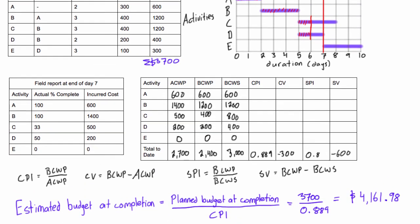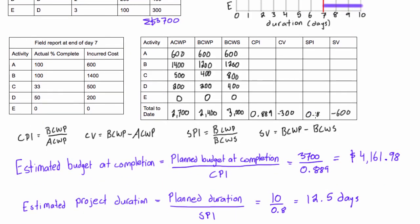And again this makes sense because from our earned value analysis we learned that our SPI was less than one, so that told us we are behind schedule. We were behind schedule at the end of the seventh day, so if we continued on that track, we would expect the entire project to be behind schedule. This is saying exactly that - we are expecting if we continue at this rate that we'll finish the project in 12.5 days instead of 10.